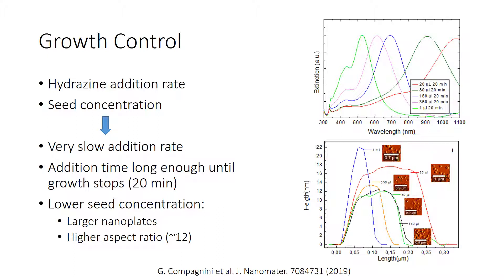Using a lower concentration of seeds, we obtain larger particles with a plasmon resonance red-shifted into the near infrared and a high aspect ratio. While using a higher seed concentration, we obtain smaller particles with a plasmon resonance in the visible range.